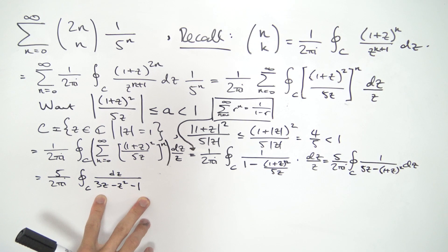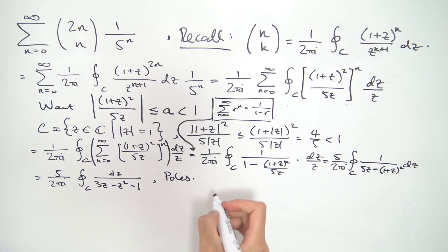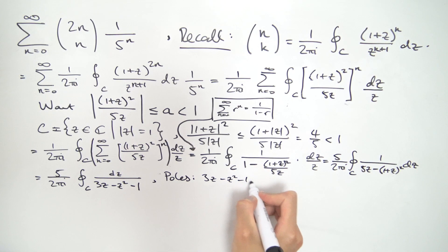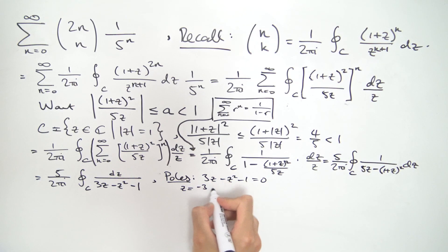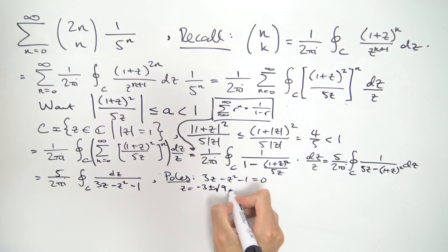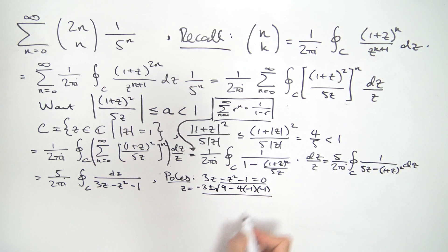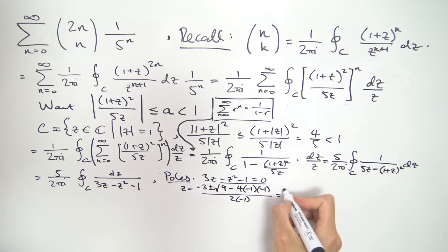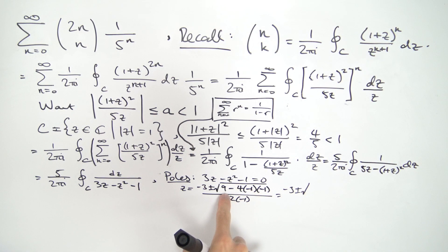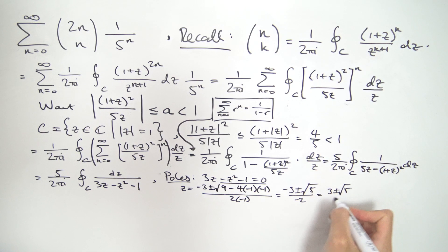Now we're left with a reciprocal of a quadratic, so we find where the poles are by solving 3z minus z squared minus 1 equals 0. Using the quadratic formula: z equals minus b which is minus 3, plus or minus the square root of b squared which is 9, minus 4ac where a is minus 1 and c is minus 1, all divided by 2 times minus 1. This simplifies to 3 plus or minus the square root of 5, divided by 2.